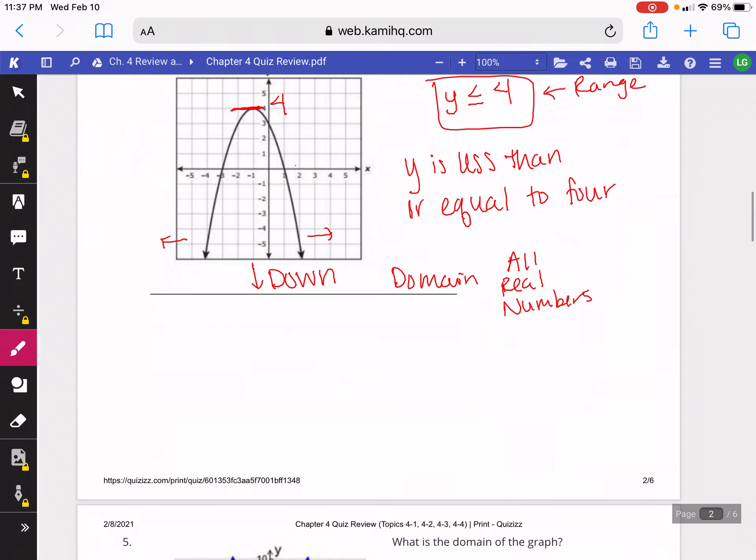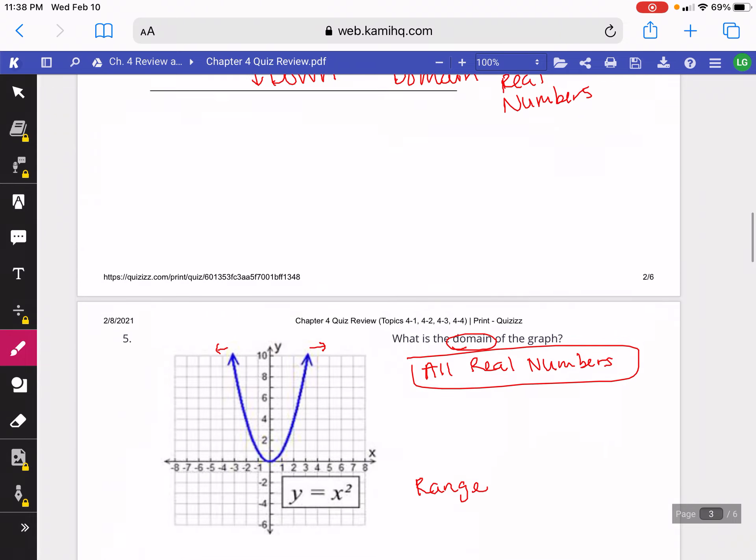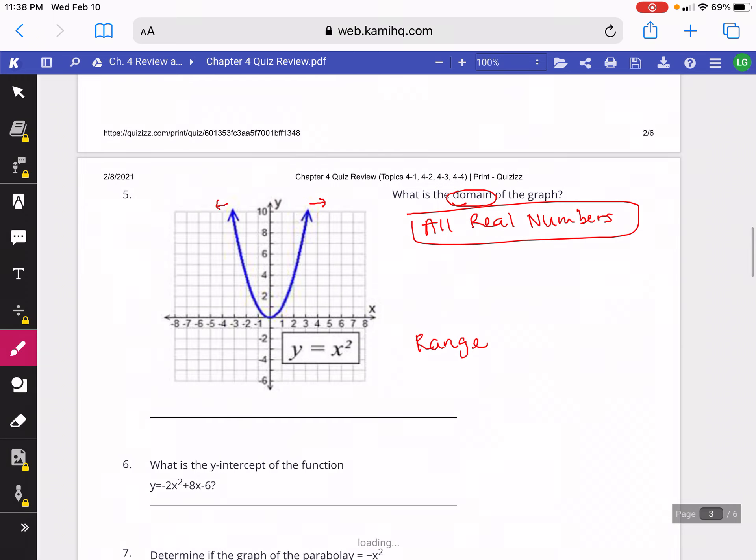This next question also asked for domain. So the domain here, like we mentioned in the last one, you look left to right. But this one will keep going left to right, so the domain is going to be all real numbers. If it had asked for the range instead of the domain, you would look from bottom to top. So this one we would write y, and since the graph's going up, it would be greater than or equal to, and the y's here begin at 0.